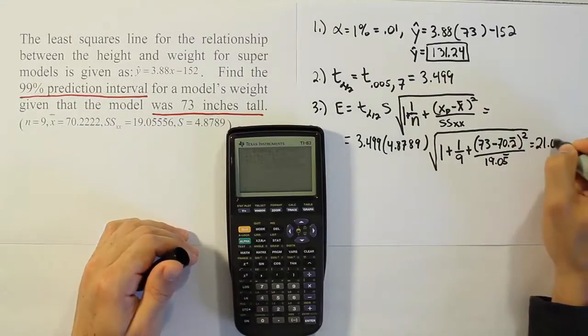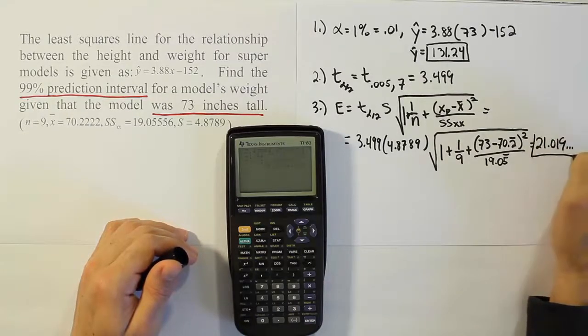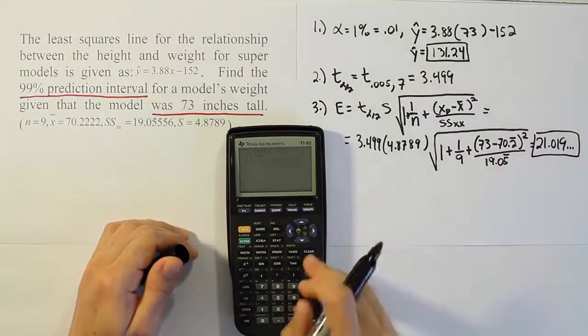So 21.019, a pretty large error. We'll store that in our calculator under x and move on to the next part of the problem.